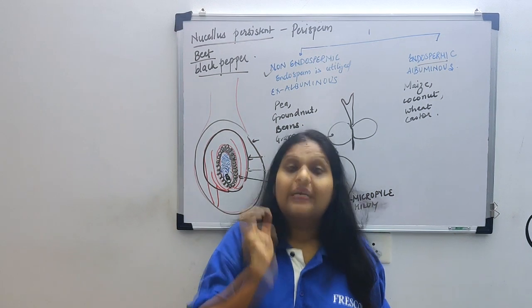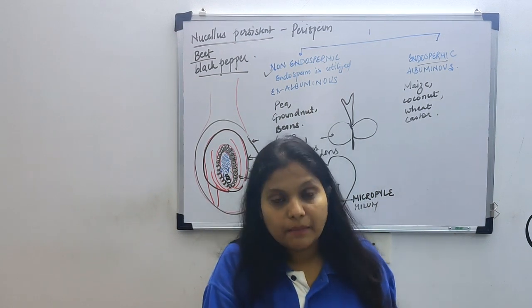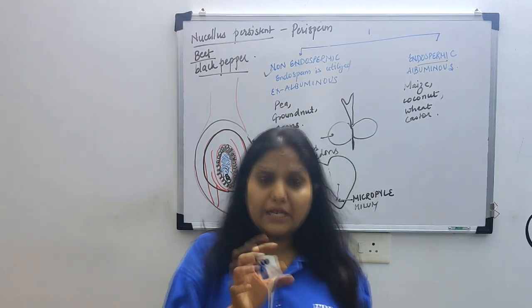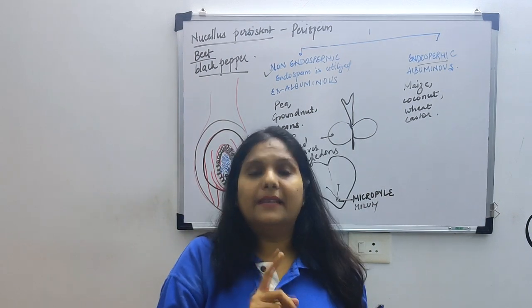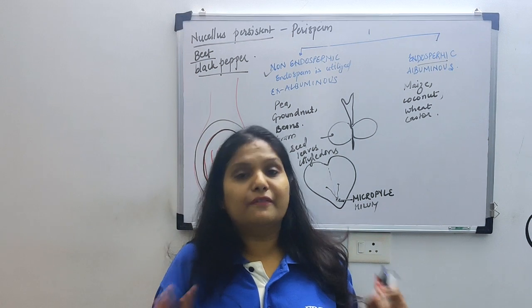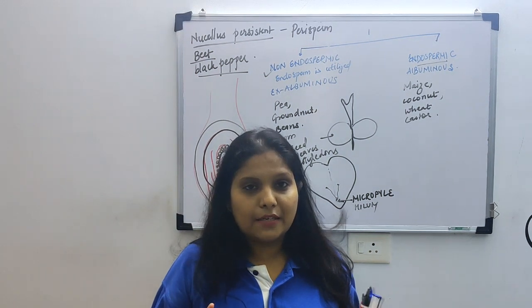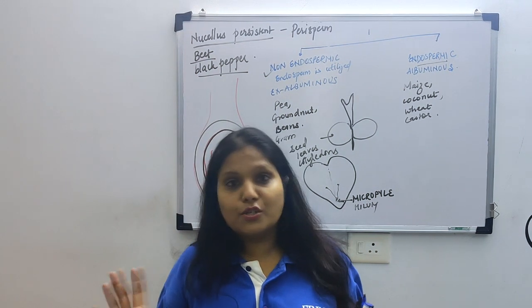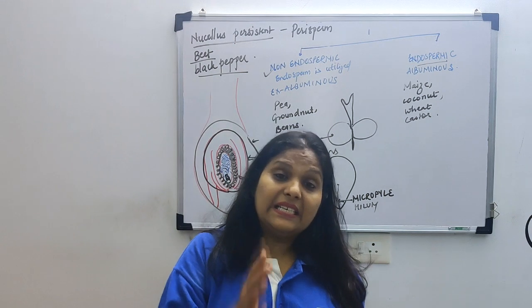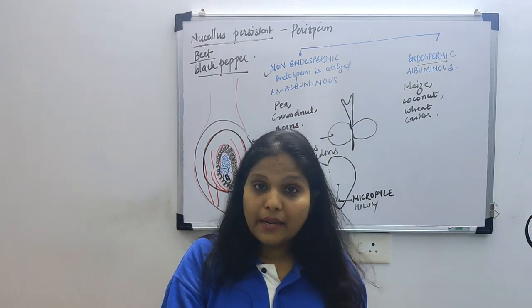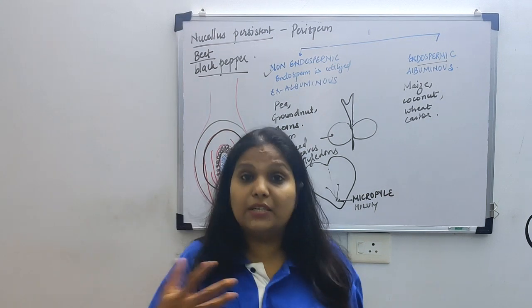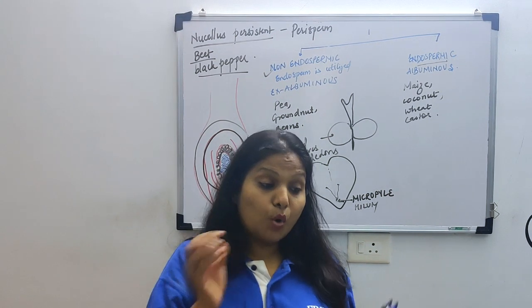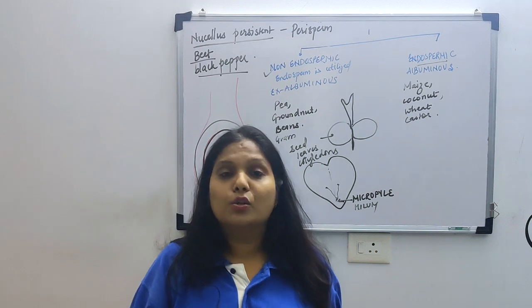We are not going to discuss seed dispersal, but remember, once the seed matures, it will disperse. But will it immediately form a new plant after dispersing? Not at all. Every single seed has some period where it remains metabolically inactive. Such period is called dormancy. Dormancy is that period where the seed is alive and has potential, but it will just remain inactive or metabolically very less active, even if it gets good conditions. Every seed has a dormancy period.